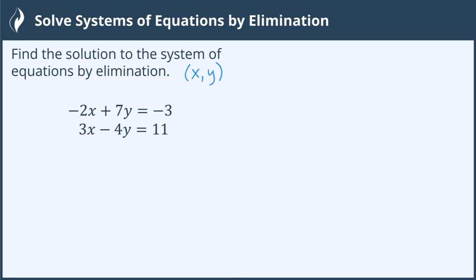I do notice that I have a negative 2x in the first equation and a 3x in the second equation. So if I could turn those into a negative 6x and a positive 6x, then those would cancel out when I add them together. So let's try it.